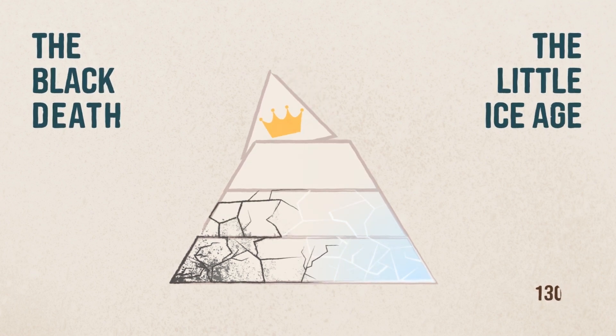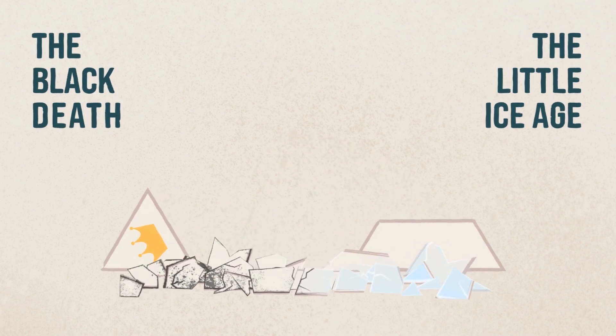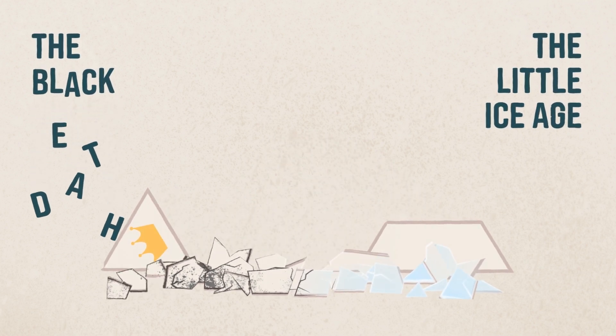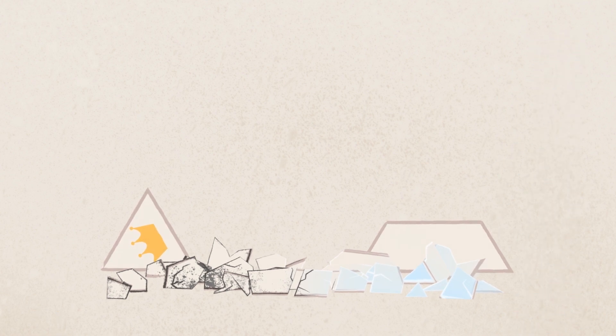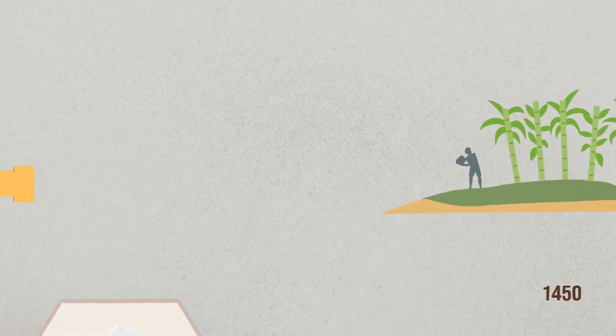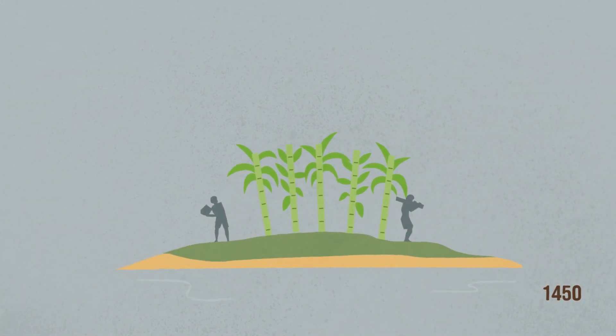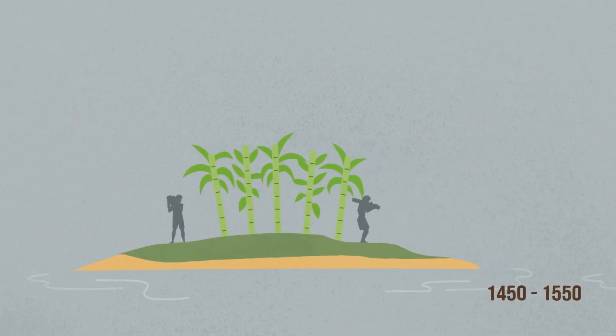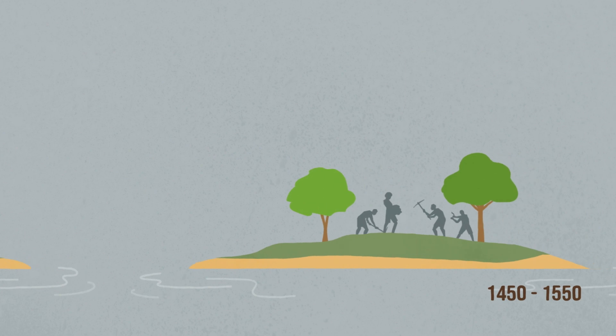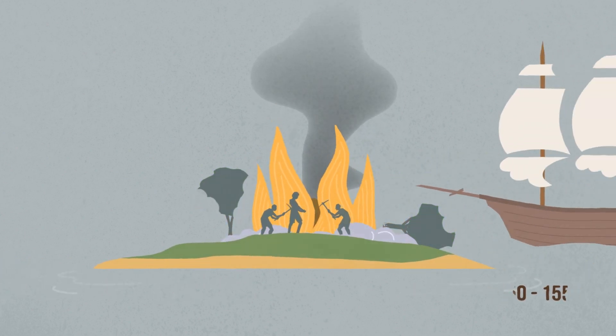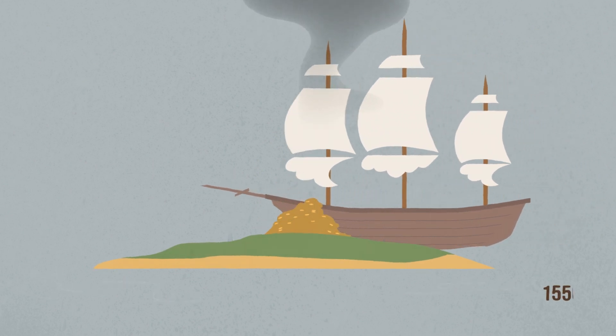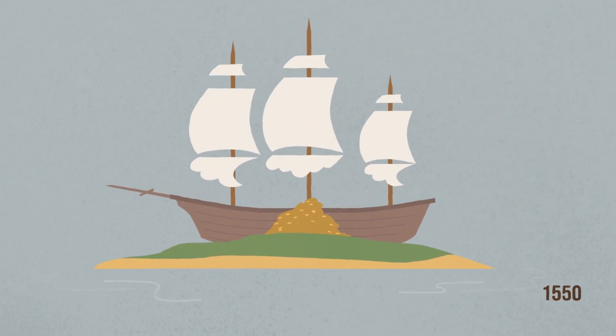These two crises greatly upset the balance of power and wealth in the Middle Ages. To restore their wealth and power, Europe's wealthy began to experiment. They started by colonizing islands, forcing the people who lived there to work growing and harvesting sugar, cutting down forests for energy, and mining gold and silver. When those people died, they enslaved and imported Africans to replace them.